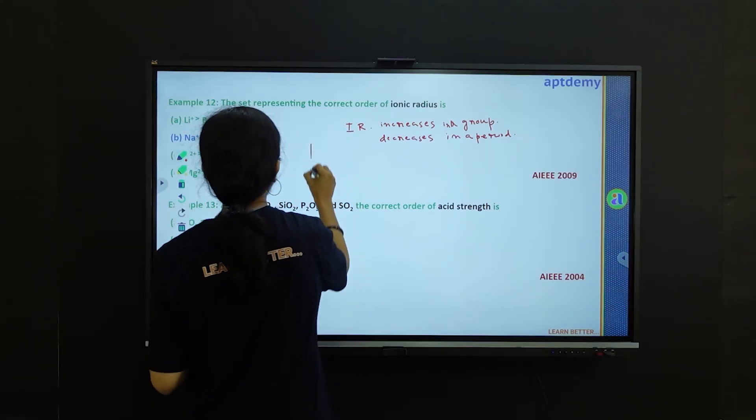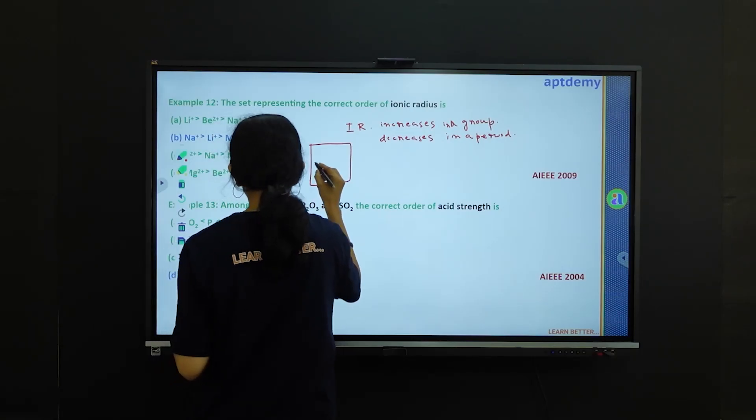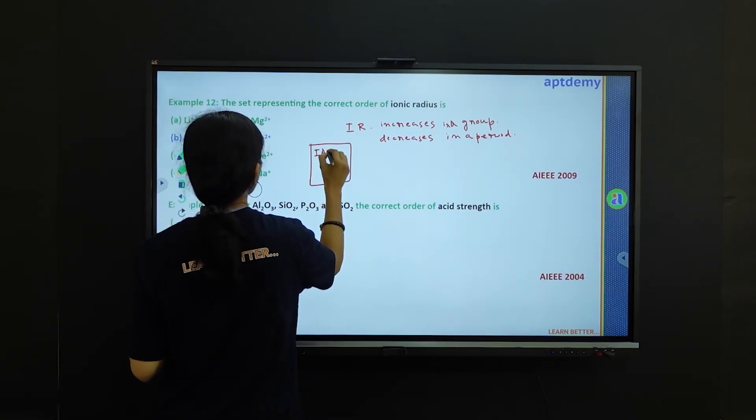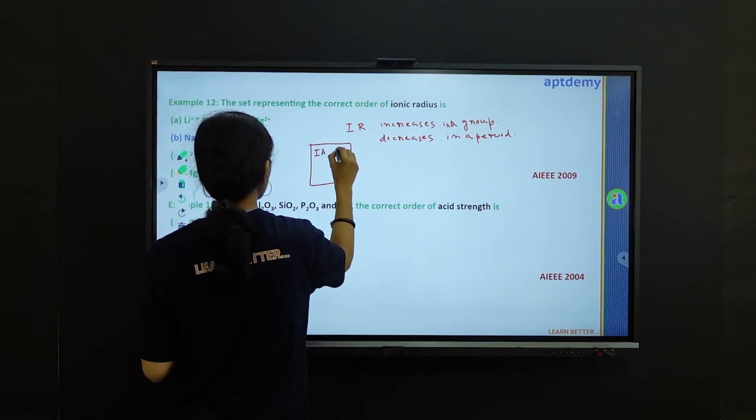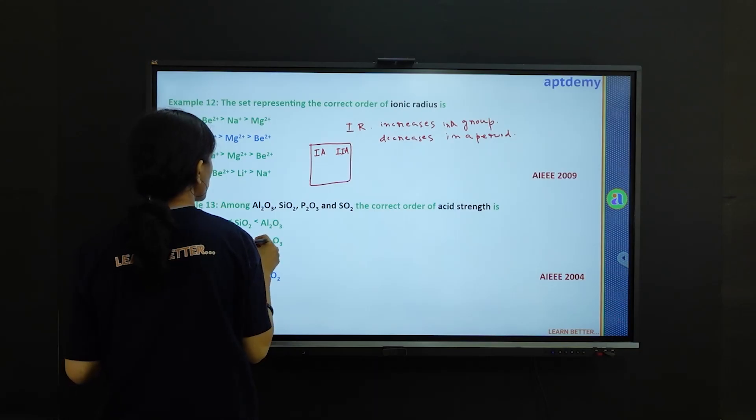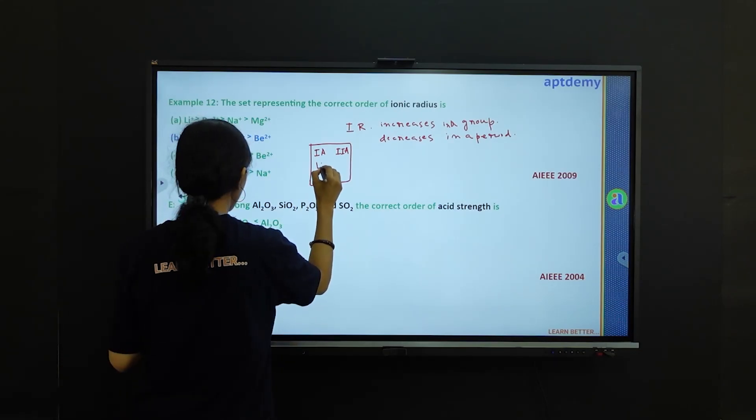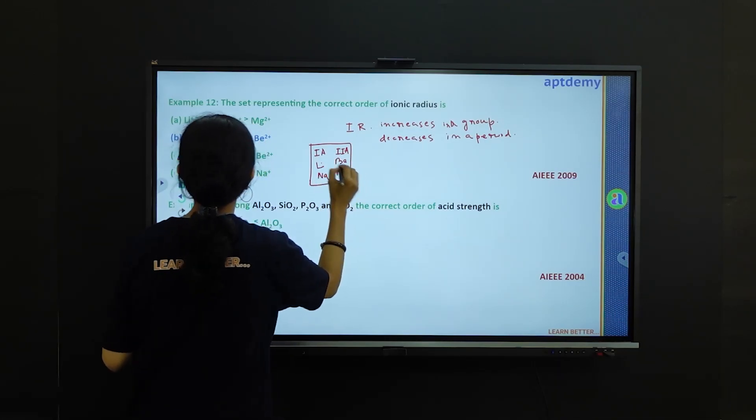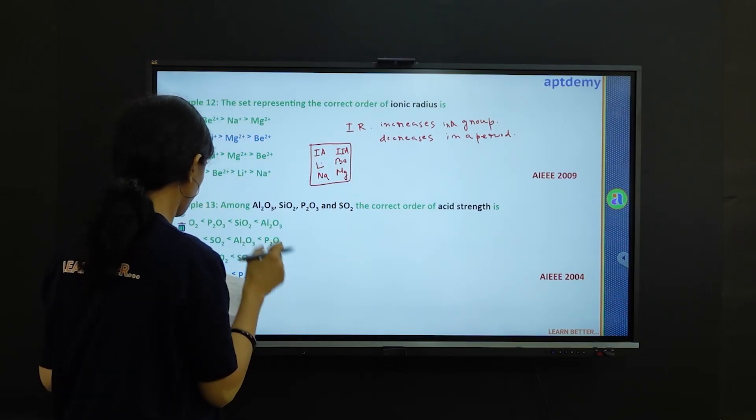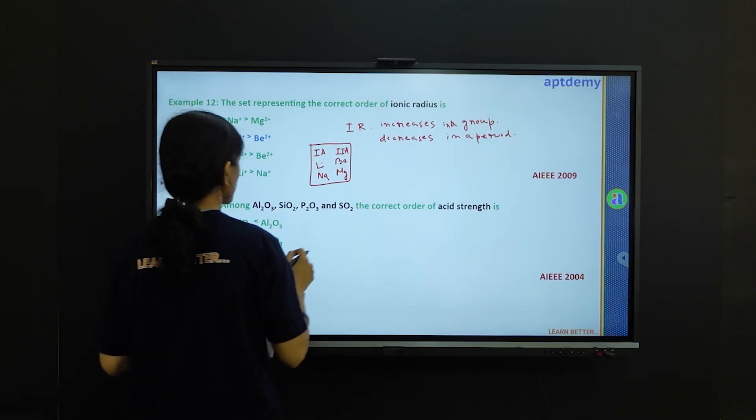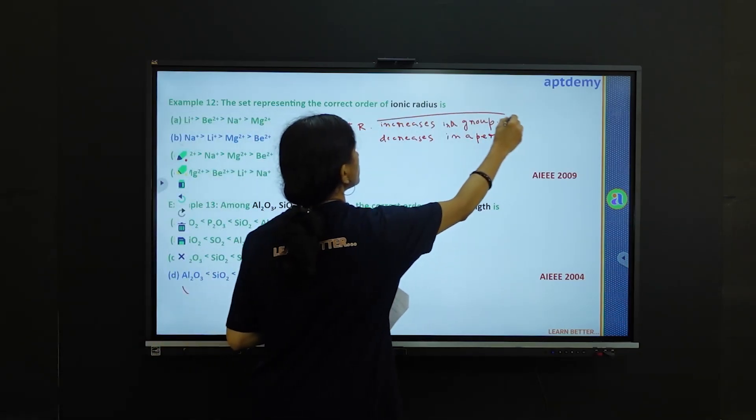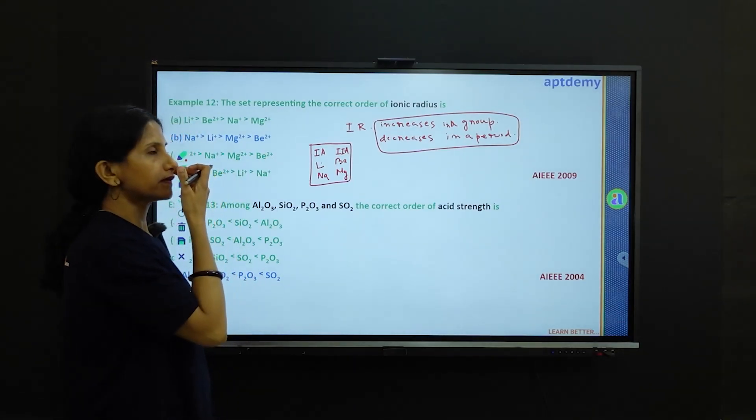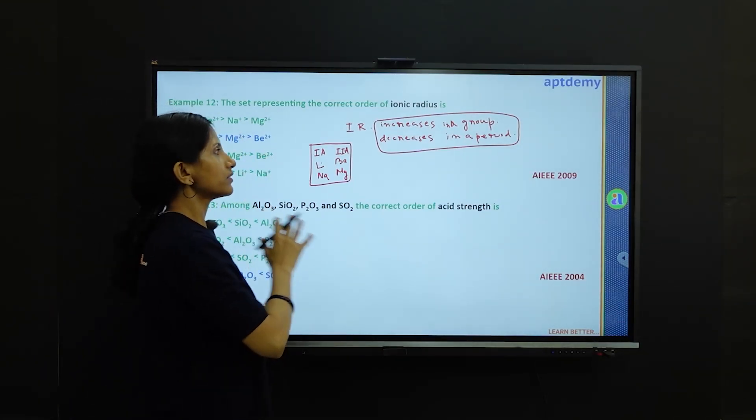If you arrange the given elements in the periodic table, we are having 1A and 2A elements: lithium and sodium, beryllium and magnesium. If you follow the trend that ionic radius increases down a group and decreases in a period.